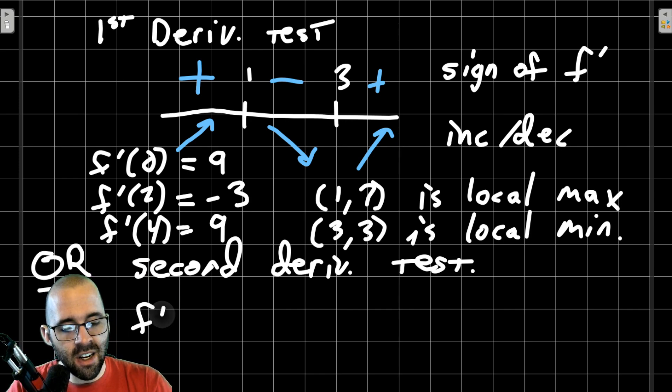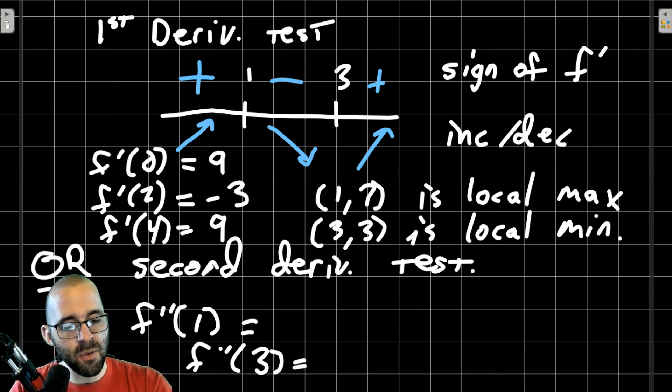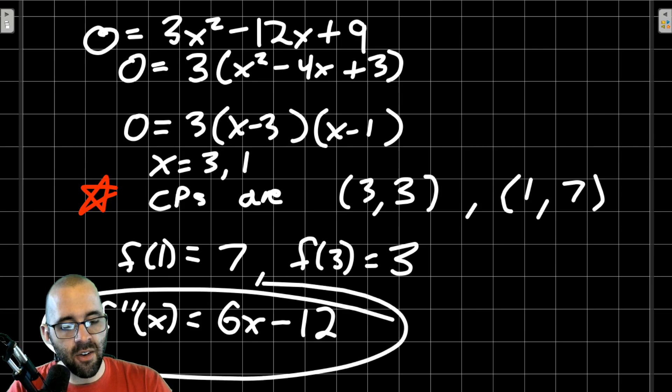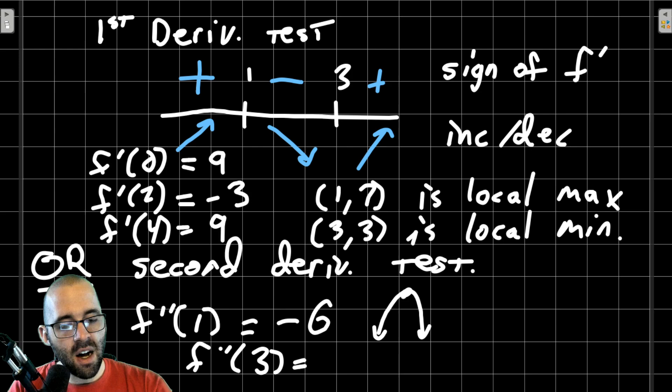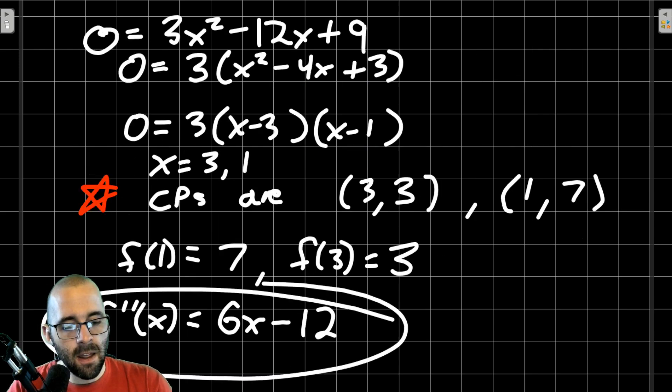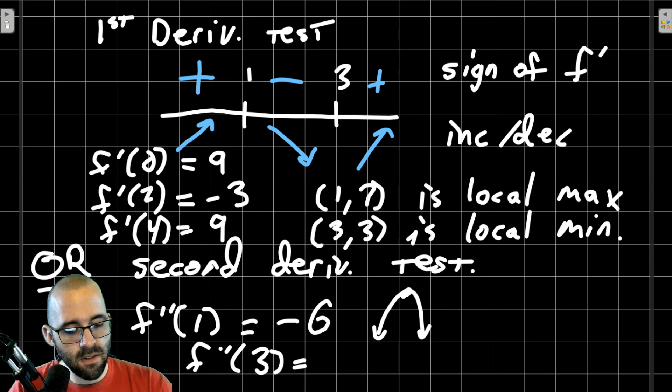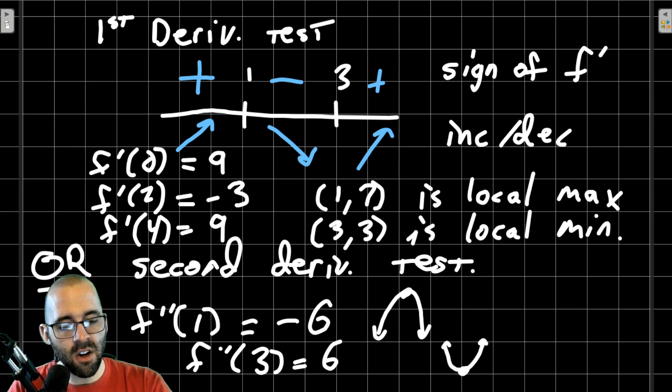If we use the second derivative test, we plug in the actual points into the second derivative. We'll look at the second derivative at 1 and at 3. The second derivative is 6x - 12. If we plug in 1, we get negative 6 for our second derivative. It's concave down right here. So if it's concave down, this should be a local max. And indeed, at positive 1, it is a local max. If we plug in positive 3, we'll get positive 6. It should be concave up, which will be a local min, which is also what we had.